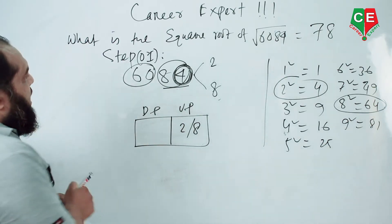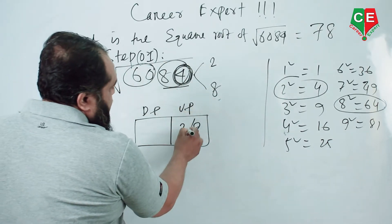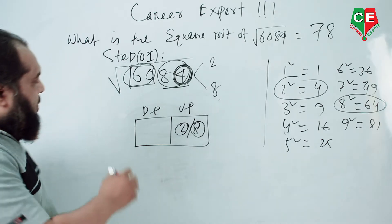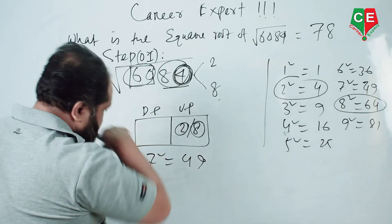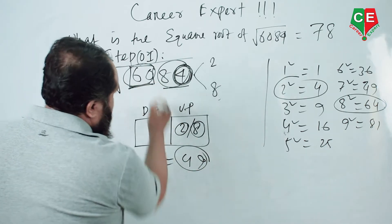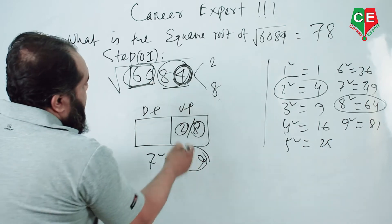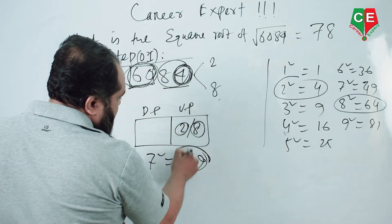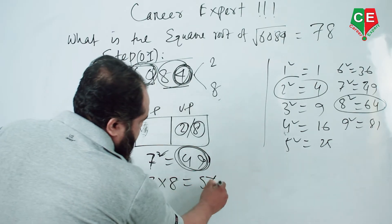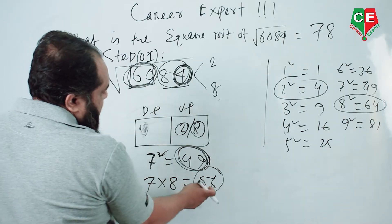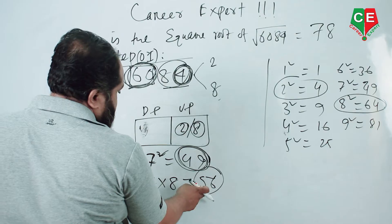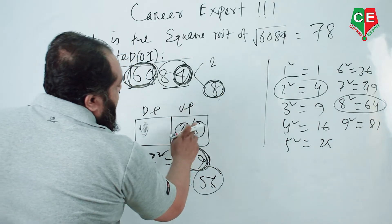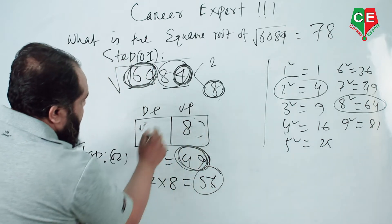Our square root answer will have unit place either 2 or 8. Then look at the first pair, 60. We know 7 squared equals 49, which is below 60. Now take 7 and 8: 7 × 8 = 56, which is smaller than 60. Since 60 is greater than 56, we take the bigger number. Between 2 and 8, the bigger number is 8, so the unit place value will be 8.